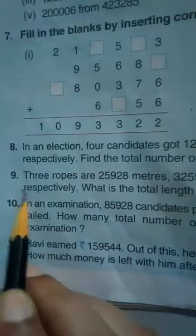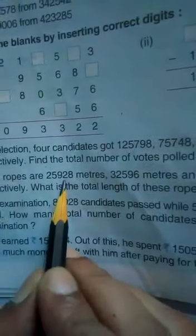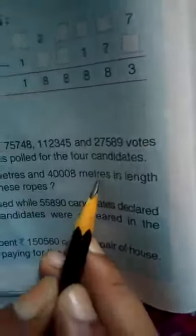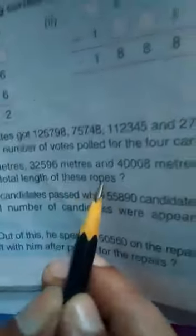Now see question number 9. Three ropes are 25,928 meters, 32,596 meters and 40,008 meters in length respectively. What is the total length of these ropes?